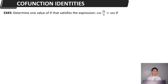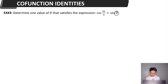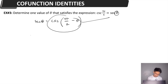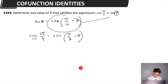Example 3, our last example for co-function identities. Determine one value of theta that satisfies the expression: cosecant(3π/4) = secant θ. We are going to solve for the value of theta. Since cosecant and secant are co-functions, we use the co-function identities. Secant θ = cosecant(π/2 − θ). This time, since we are working in radians, we use π/2 instead of 90 degrees.